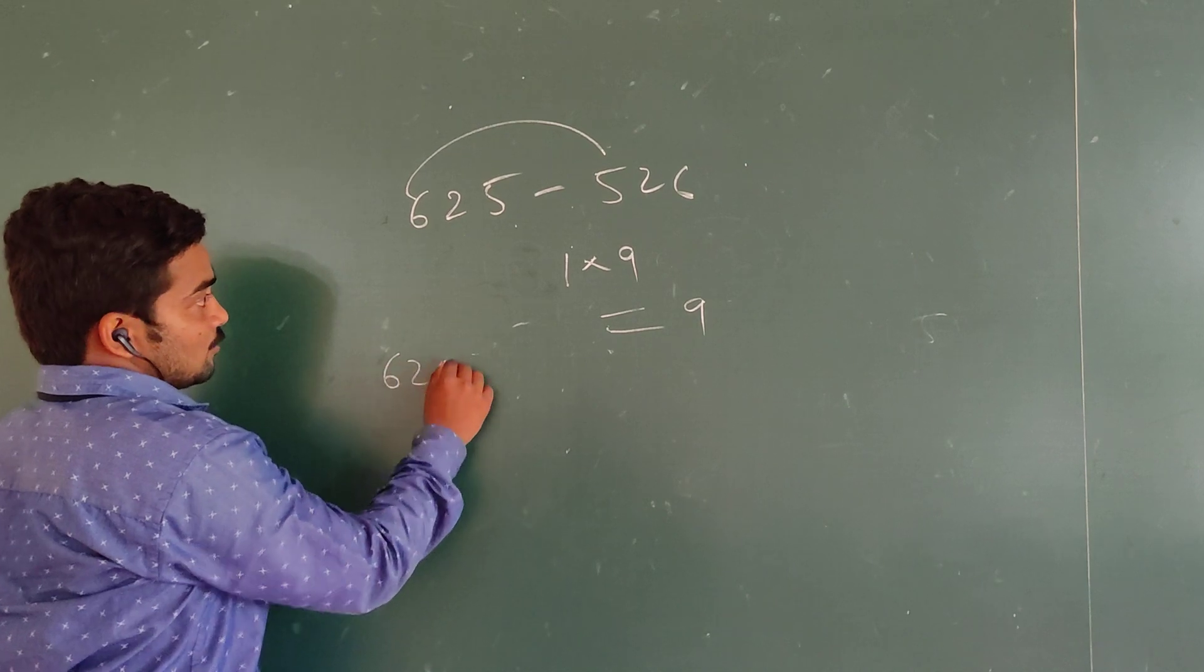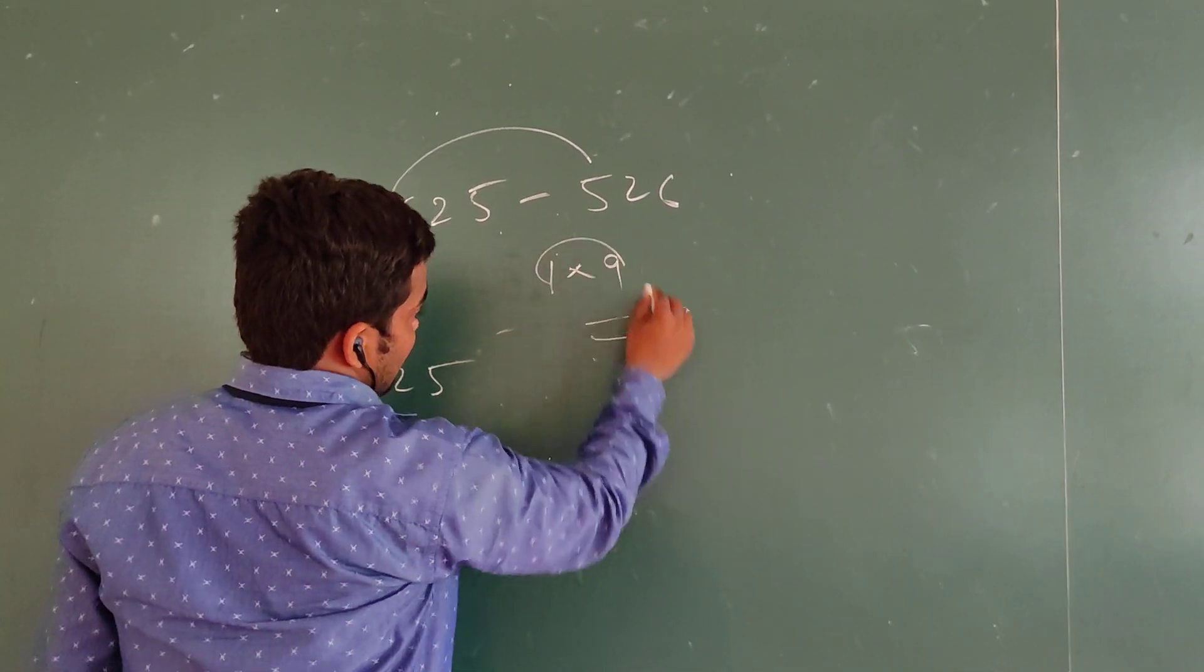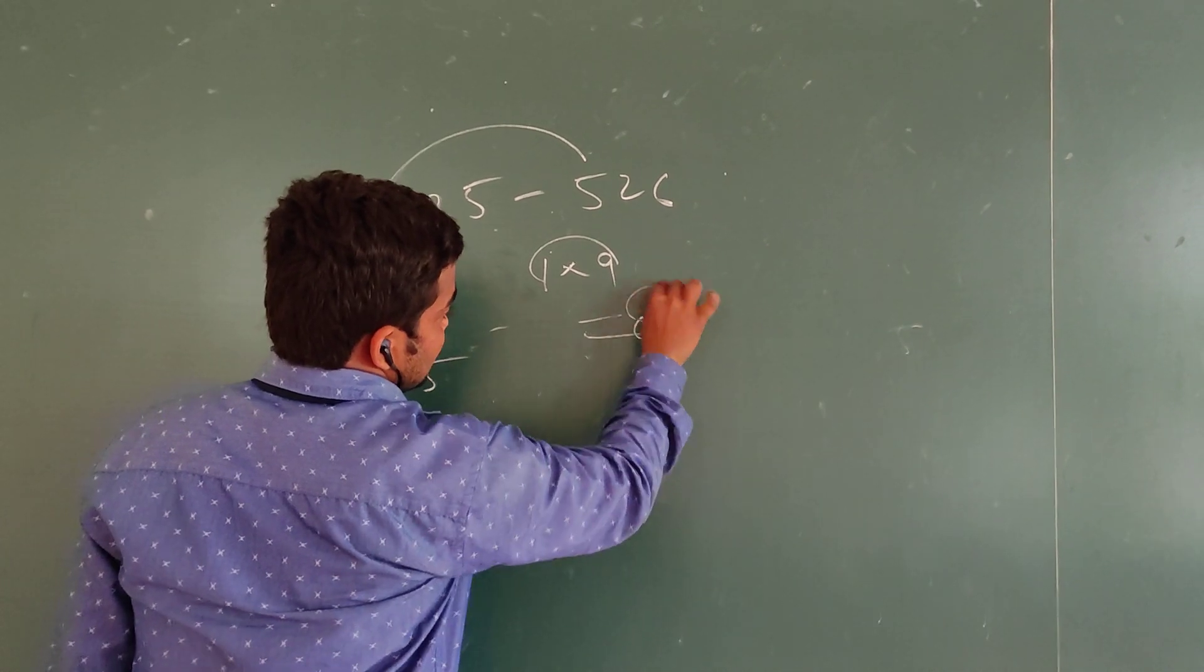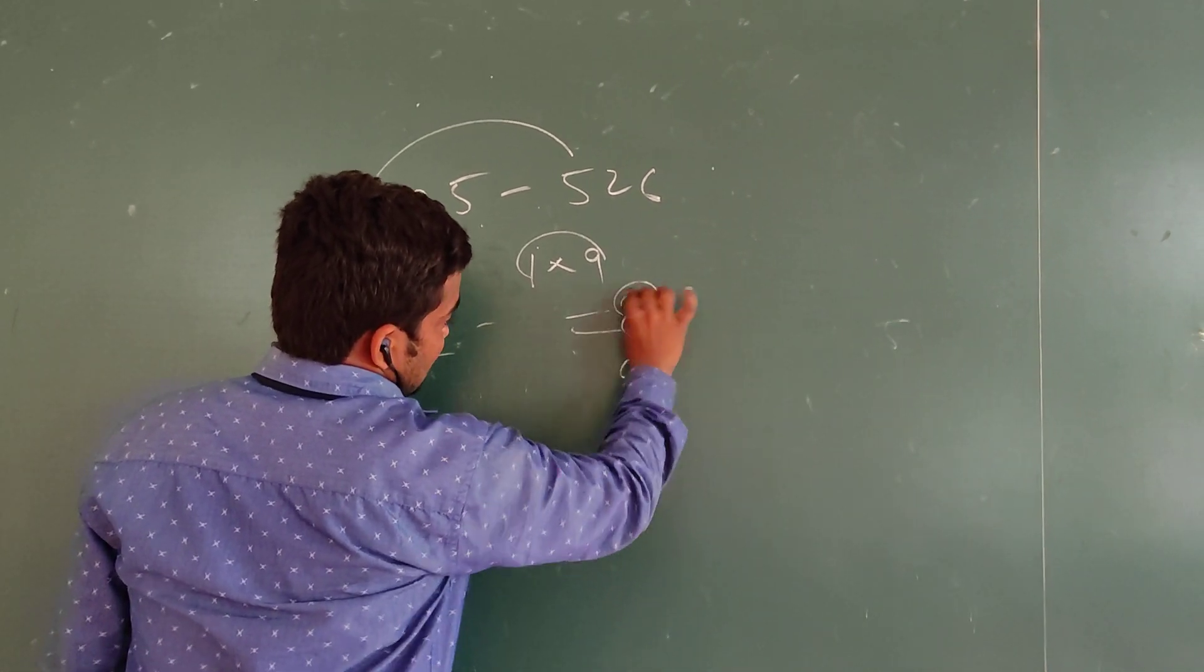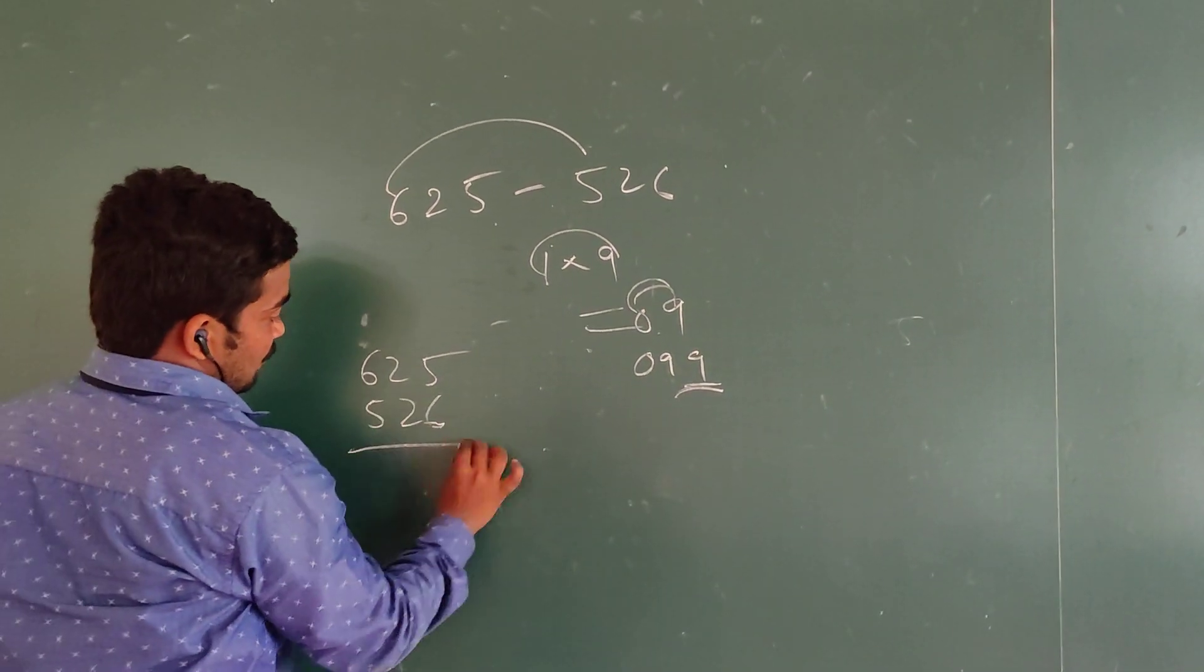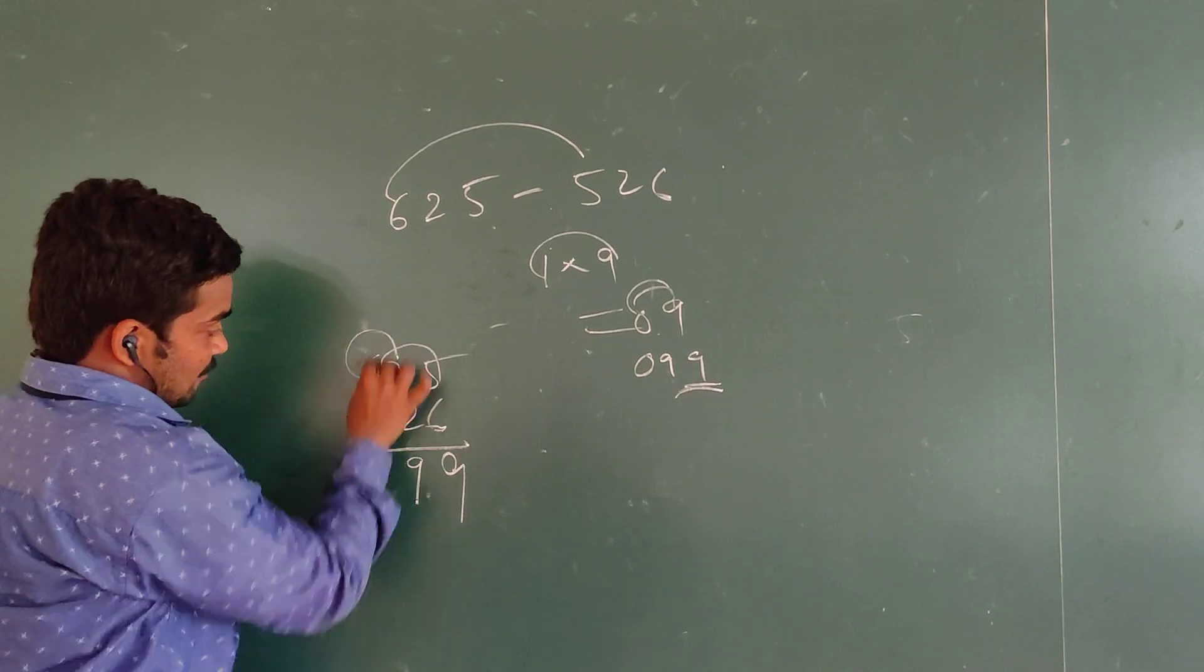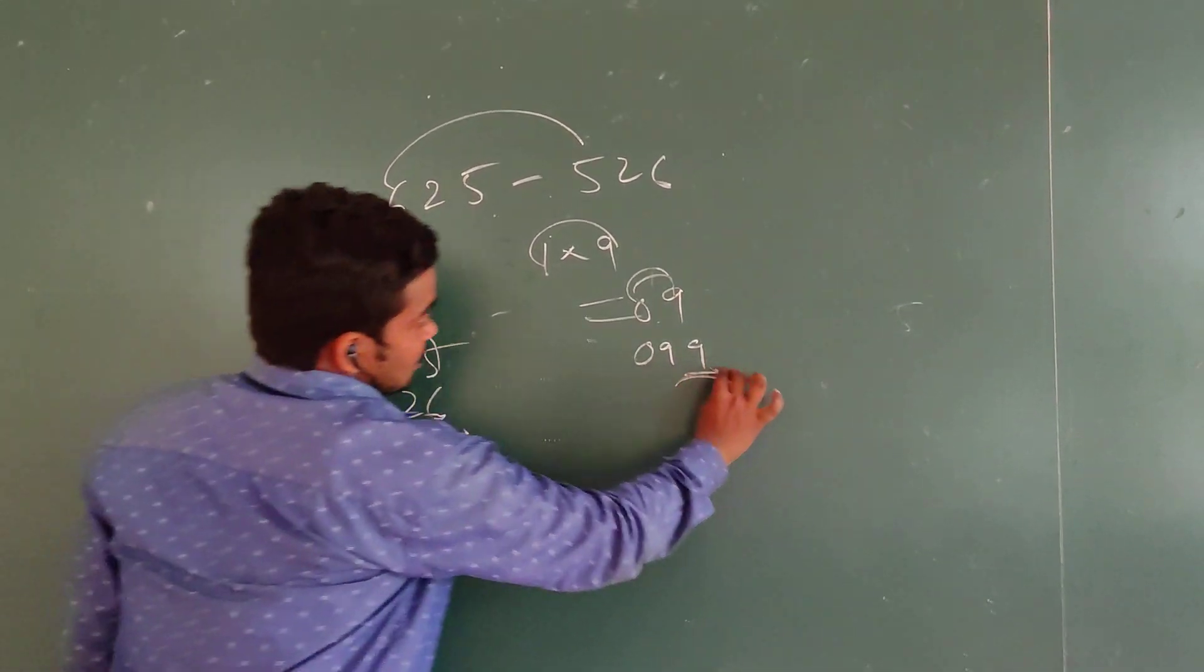Let's verify. 625 minus 526. We are getting 9. So, we consider 0, 9. Putting 9 in between: 0, 9—that's 099, which equals 99 as your answer. Let's verify here: 15 minus 6 is 9, 11 minus 2 is 9, 5 minus 5 is 0. 99 is your answer.